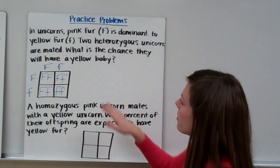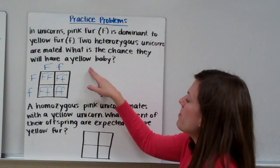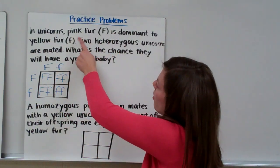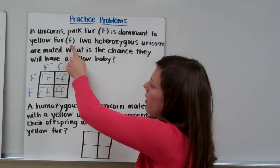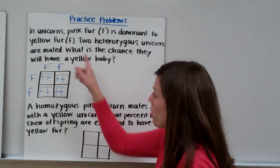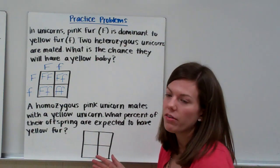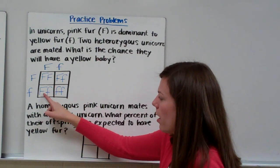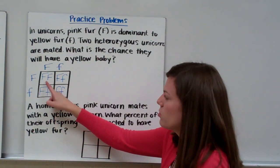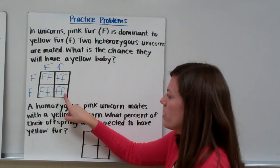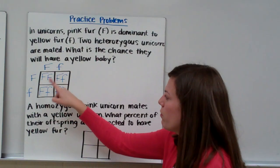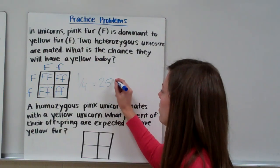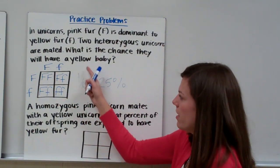The question asks what is the chance they will have a yellow baby. Big F codes for pink fur, and yellow fur is coded by little f. The recessive trait only shows up when both alleles are recessive. The unicorns with big F little f will have pink fur, and only the one with little f little f will have yellow fur. So one out of four, or 25%, is the chance these unicorns would have a yellow baby.